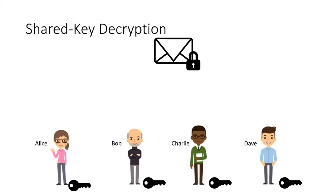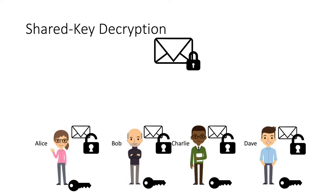Let's begin with a simple shared key decryption system. We have a group of users — say a set of employees in a company — and we want to encrypt messages to everyone in the group. We can do this by generating a public key for the group and providing everyone with the corresponding decryption key. Whenever someone wants to broadcast a message, they encrypt under this single public key, and since everyone holds the shared decryption key, everyone can decrypt and recover the message.